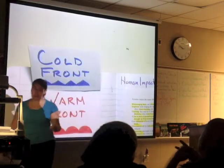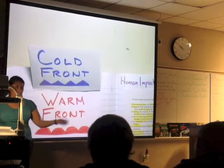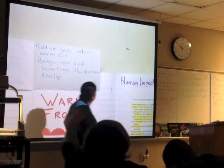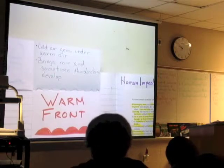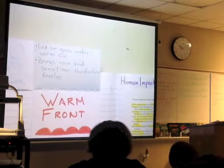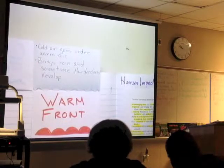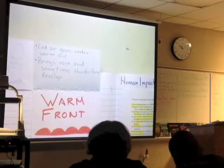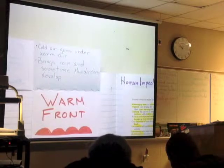What we know about a cold front is that the cold air is going under the warm air. Why would cold air go under warm air? It's density — cold air is more dense than warm air. So since cold air is more dense, it moves under the warm air, and the warm air rises. When that occurs, we can predict that rain and thunderstorms might develop.